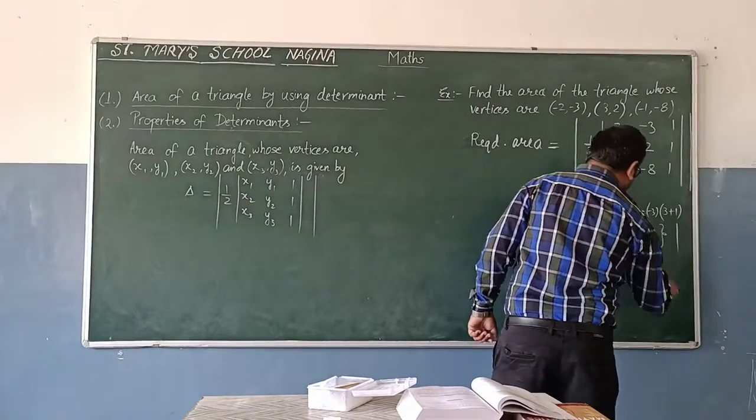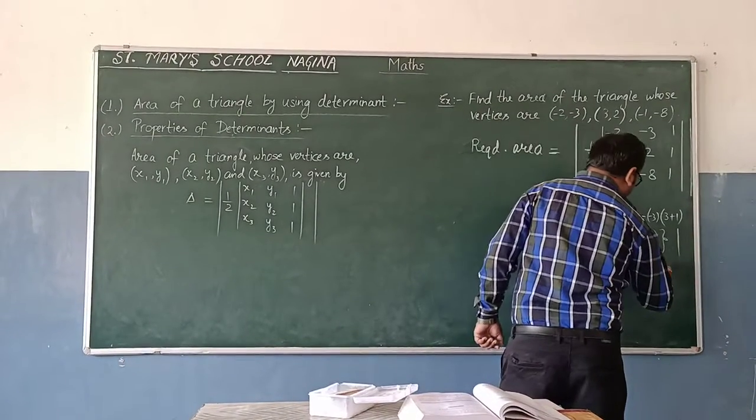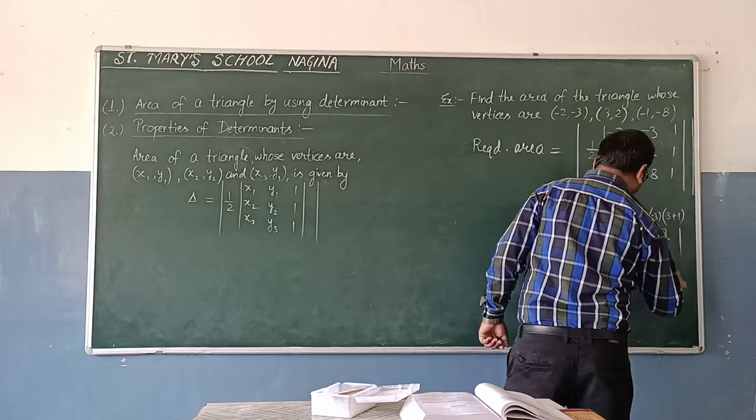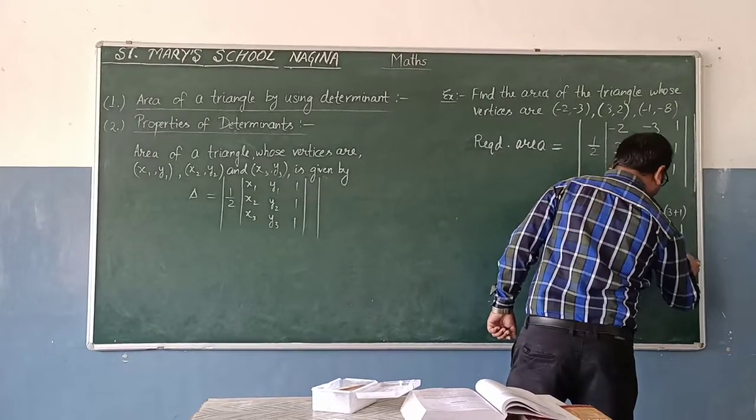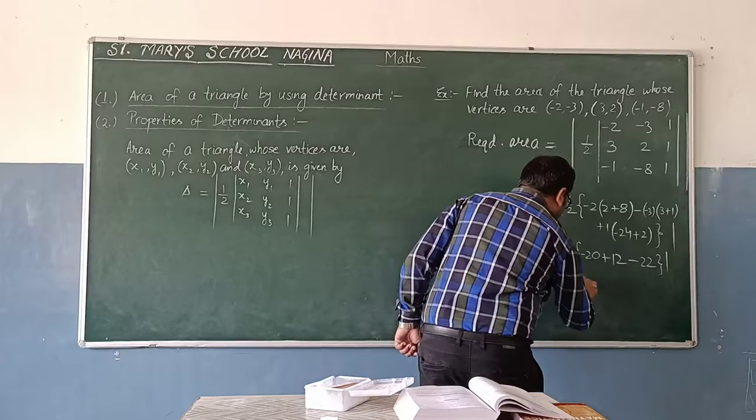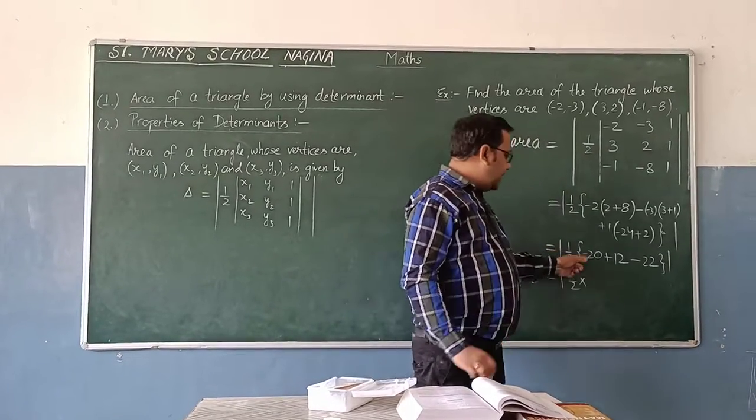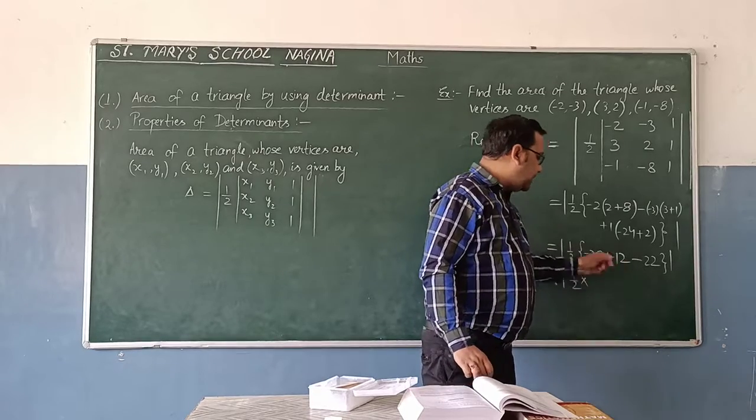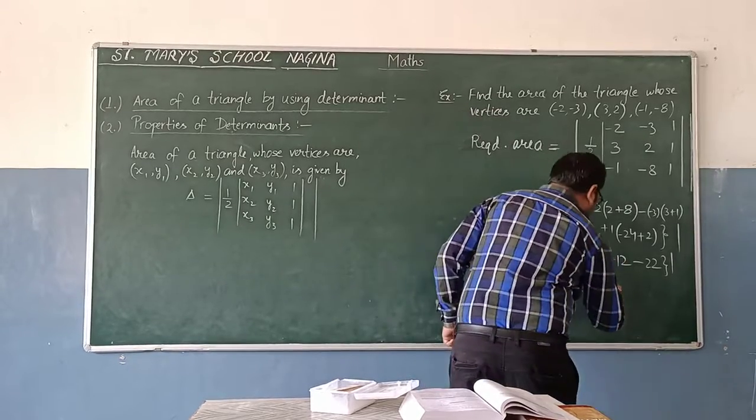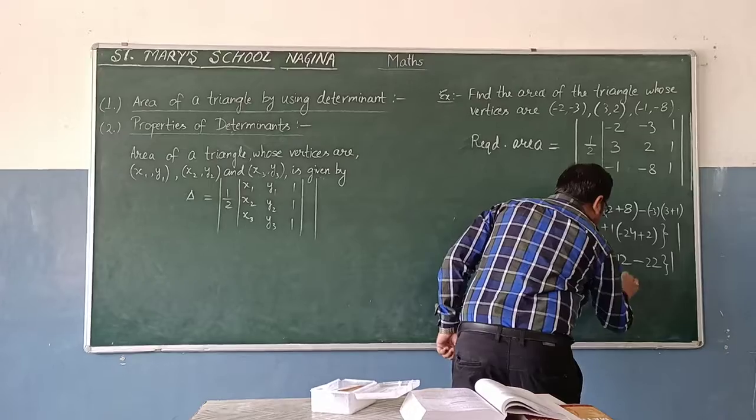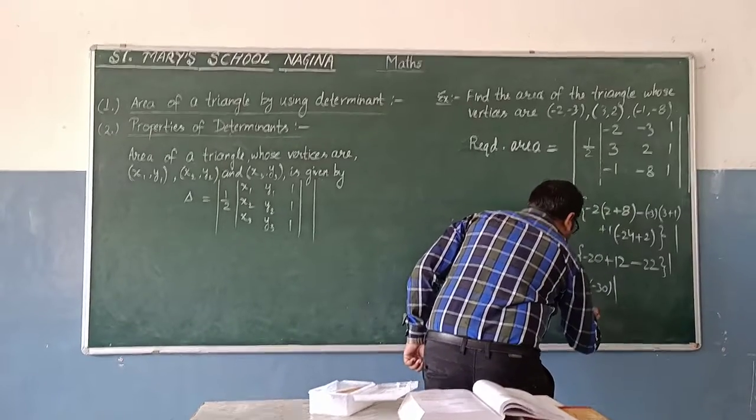And, minus 22. Now, this time take 1 upon 2, 20.